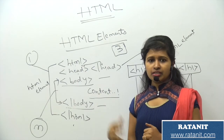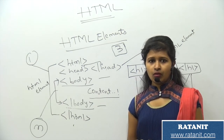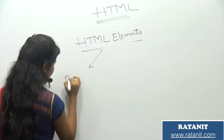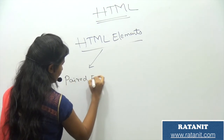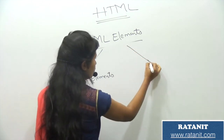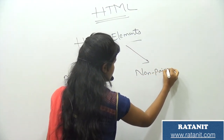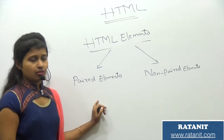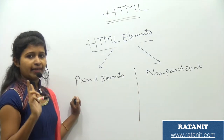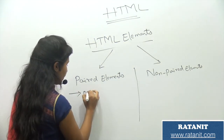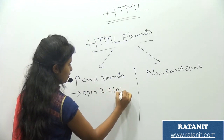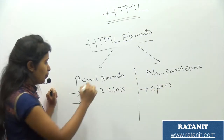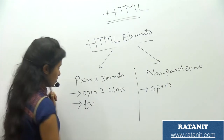HTML elements are classified into two types: paired elements and non-paired elements. Paired elements contain both an open tag and a close tag. Non-paired elements contain only an open tag.